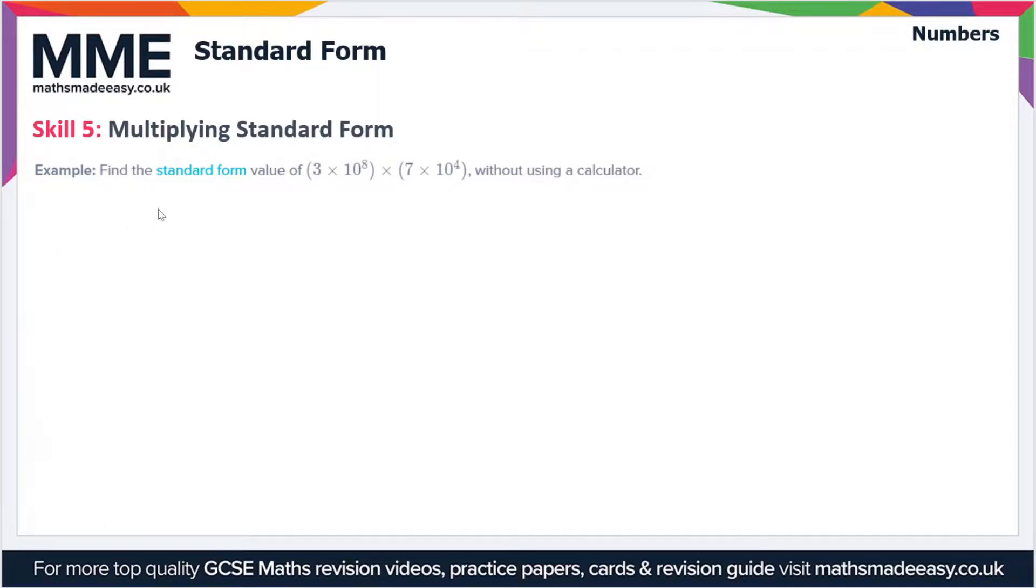In this example, we have to find the standard form value of 3×10⁸ times 7×10⁴ without using a calculator. This might look daunting at first, but it's actually quite simple. All we have to do is break this up.